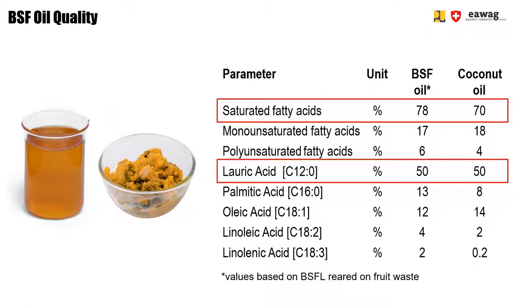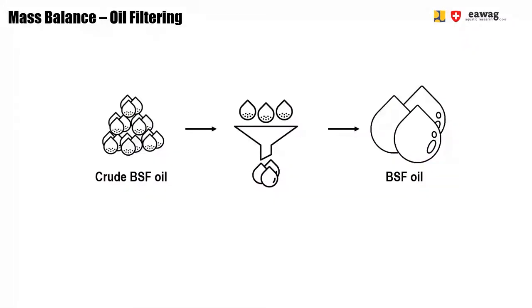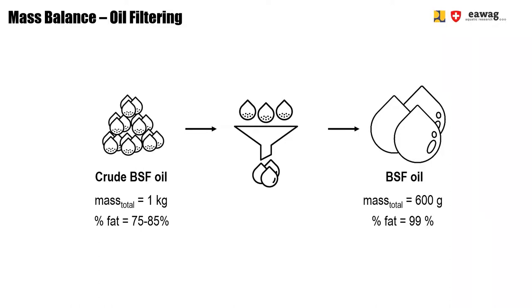The fatty acid composition also affects the oil's consistency. At room temperature, BSF Oil may be liquid or solid, as seen in the two pictures. However, above 30°C, BSF Oil becomes liquid. The refining step is required because BSF Crude Oil still contains solids. To obtain a more pure BSF Oil with around 99% fat content, you can filter it, though you will lose around 40% of the crude oil mass. The remaining solids consist mainly of proteins and fats.